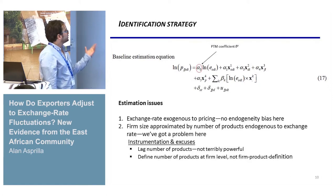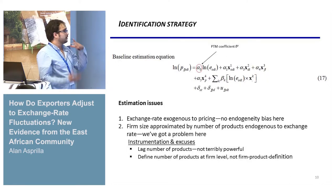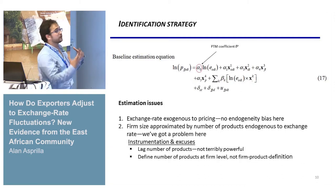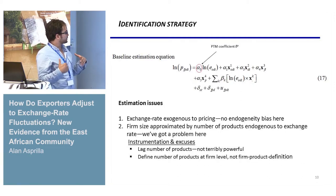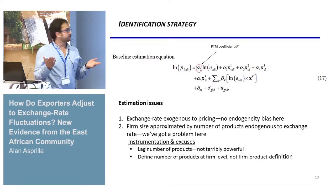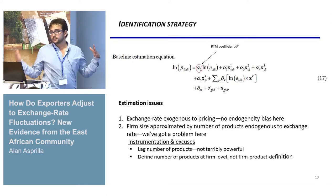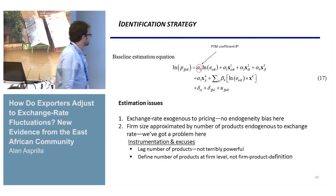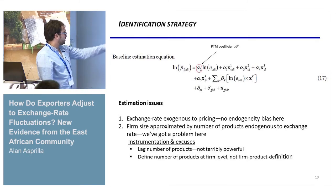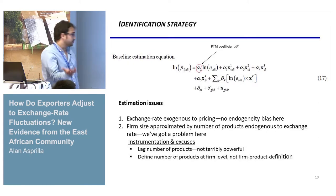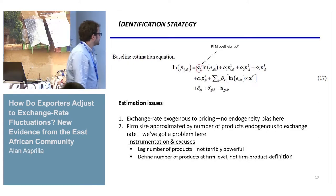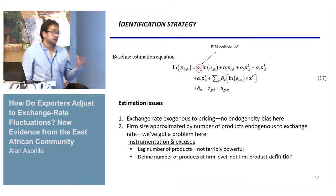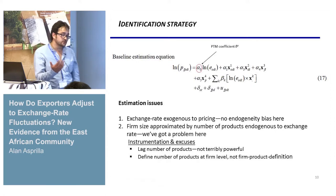Estimation issues: the exchange rate is exogenous to pricing, so there is no endogeneity bias. A key difference from developed-country papers is that here we only have customs data without additional firm-level information from statistical agencies. However, we have multiple countries rather than just one. We proxy firm productivity using the lagged number of products, defined at the firm level rather than the firm-product level, though both proxies are not very powerful.